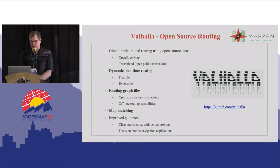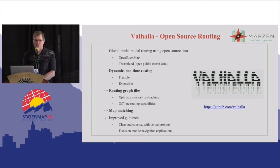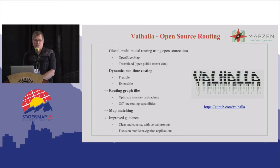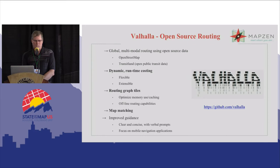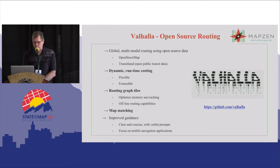We divide our routing network into tiles similar to maps, where you have geographic regions. This allows regional data access, much better caching and memory use, and allows us to target mobile and embedded platforms. And the final thing is map matching, where we can take GPS traces and locations and match them to the road network in Valhalla, and ultimately match them to the linear referencing that we do.